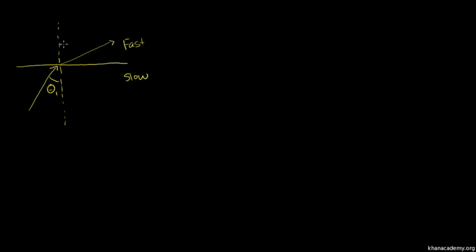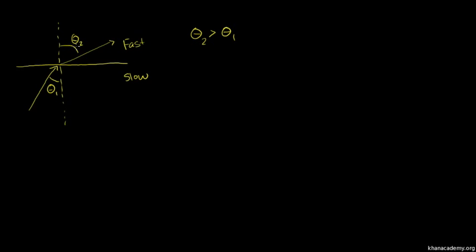Where this angle right over here is the angle of refraction. And if this is a slower medium than that, if this is a fast medium over here, we get that theta 2 is going to be greater than theta 1. The refraction angle is always bigger than the incident angle when moving from a slow to a fast medium.